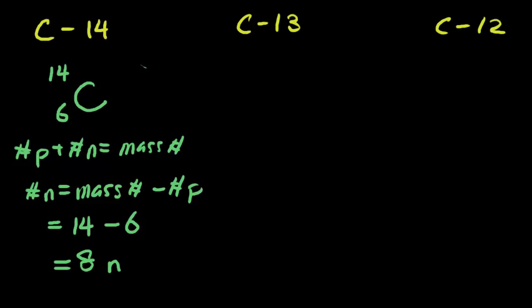For carbon-13, we do the same thing. So we have carbon, we have 13 on top, and 6 on the bottom. You'll notice that the proton number for carbon is the same, but the mass number is different. That tells us that these two are isotopes of one another. Remember that the proton number cannot change because the number of protons gives us the identity of an atom. Carbon is carbon because there are 6 protons. If it had one more, it would be something else. And if it had one less, it would also be something else. So we follow the same formula. The number of neutrons is equal to 13 minus 6, so our number of neutrons is 7 neutrons.